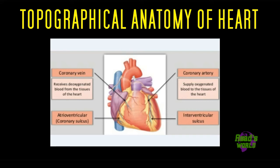The atrioventricular sulcus contains the right coronary artery, which is why it is known as the coronary sulcus. The second sulcus is the interventricular sulcus, which has anterior and posterior interventricular sulci running vertically on their respective sides of the heart, representing the wall separating the ventricles.